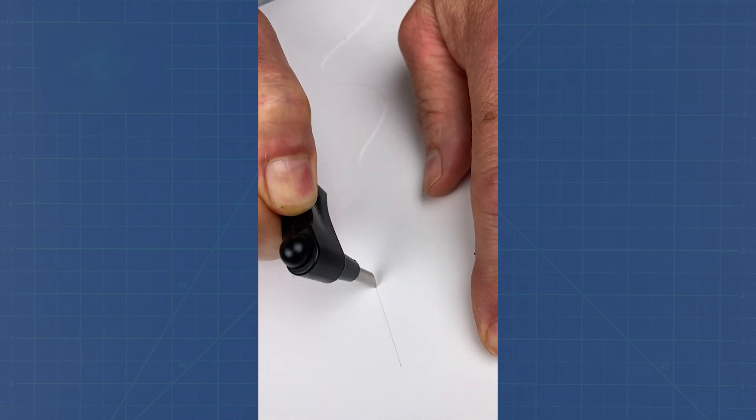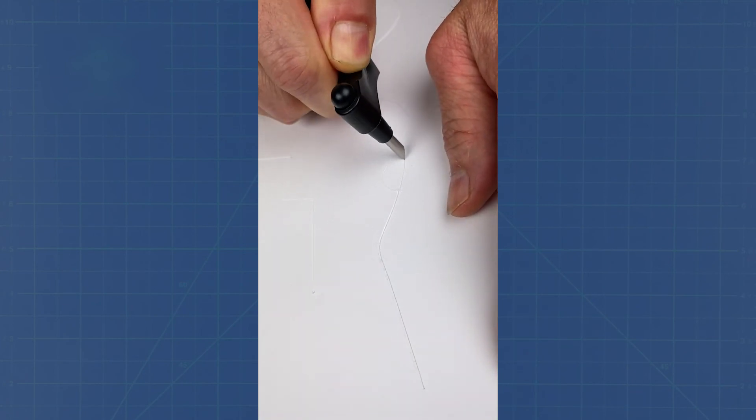The larger blade also makes it nearly impossible to get through thicker material such as cardstock.